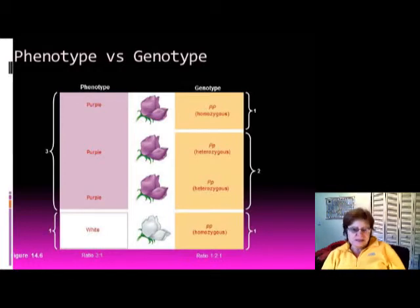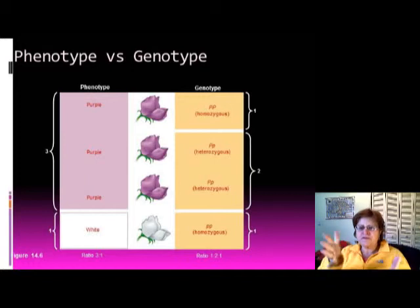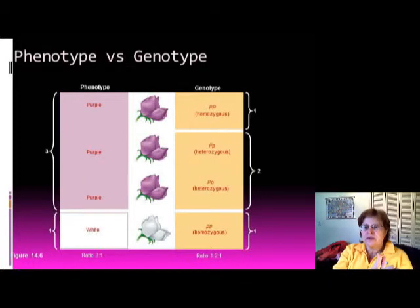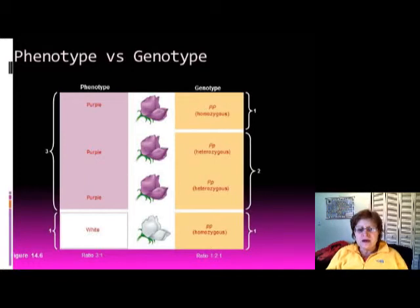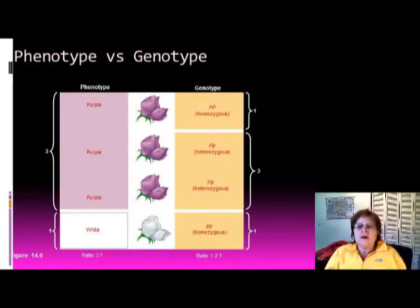Mendel's experiment involved planting purple flower pea plants and fertilizing them with white pea plants. In the first generation after fertilization, 75% of the plants were purple and only 25% were white, showing that some characteristics are more dominant than others.